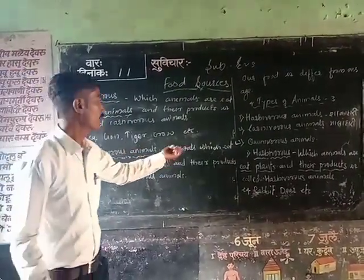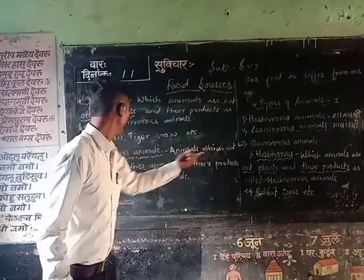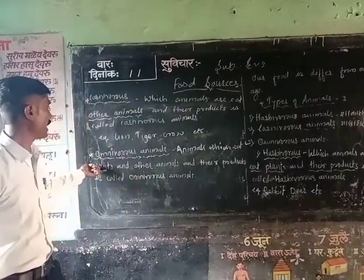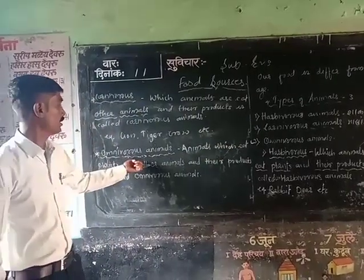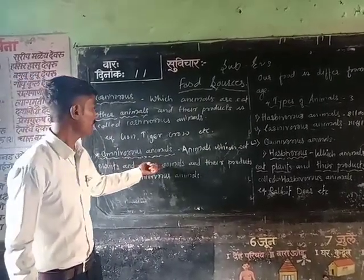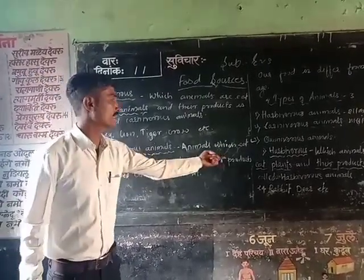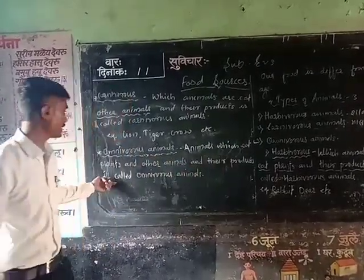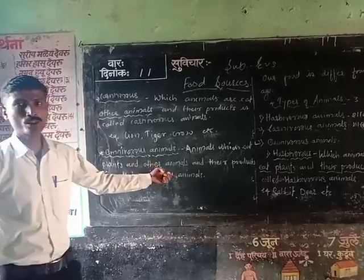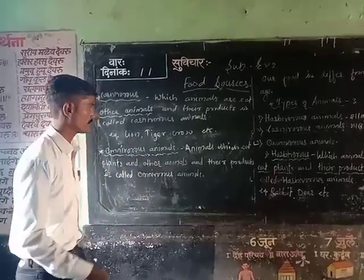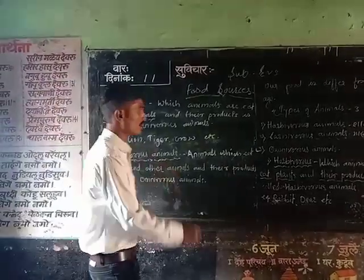So what is the definition? Animals which eat plants and other animals and their products is called omnivorous.